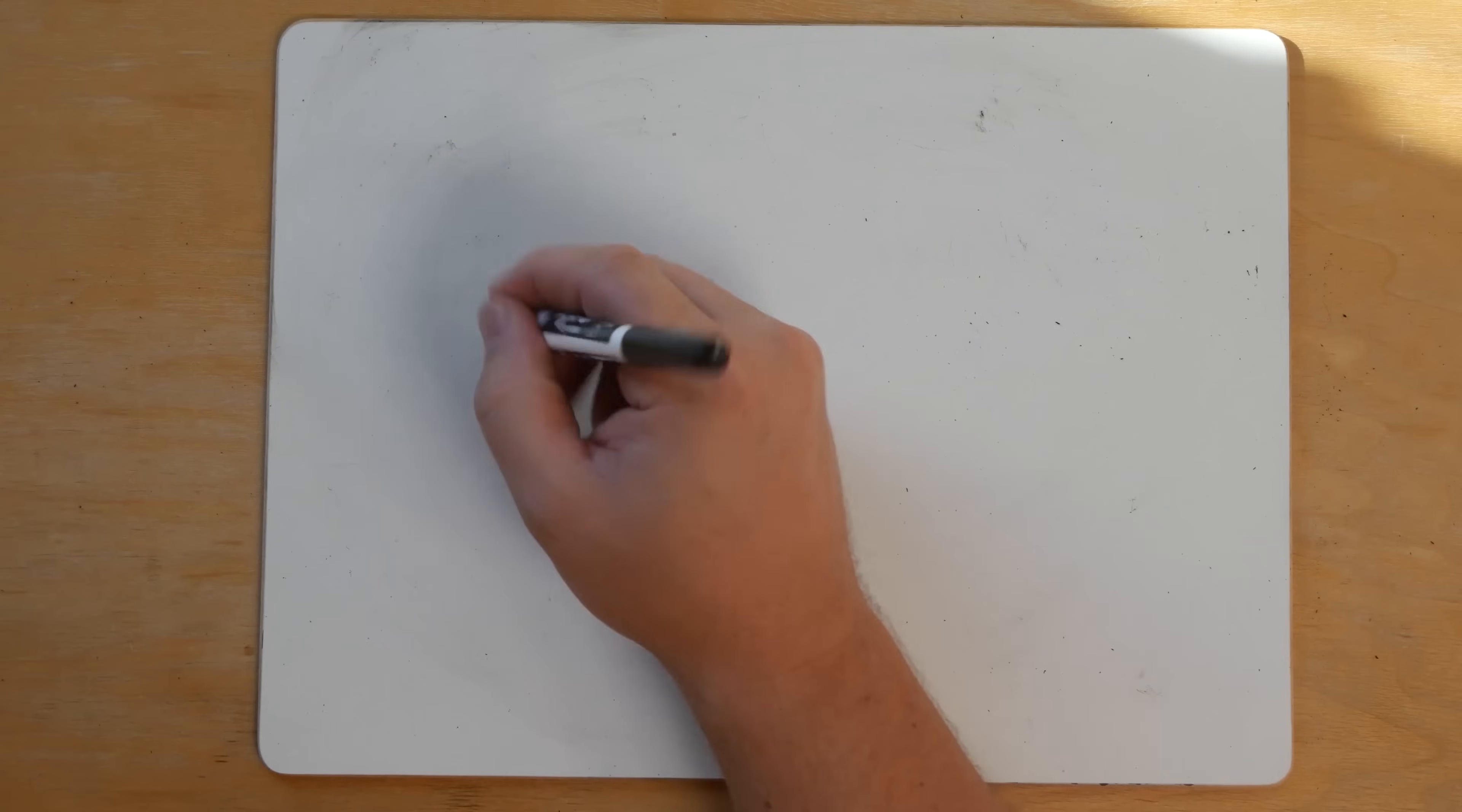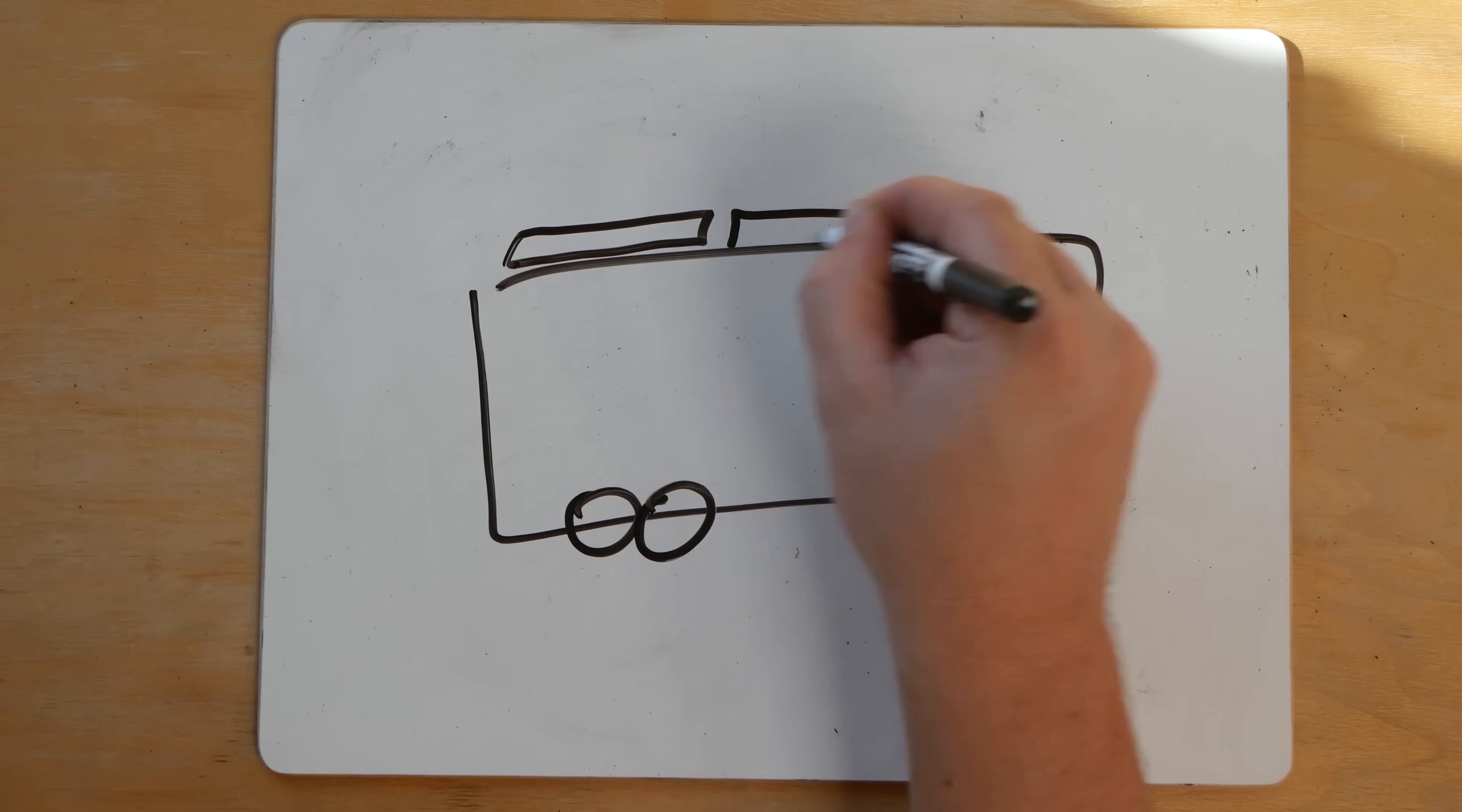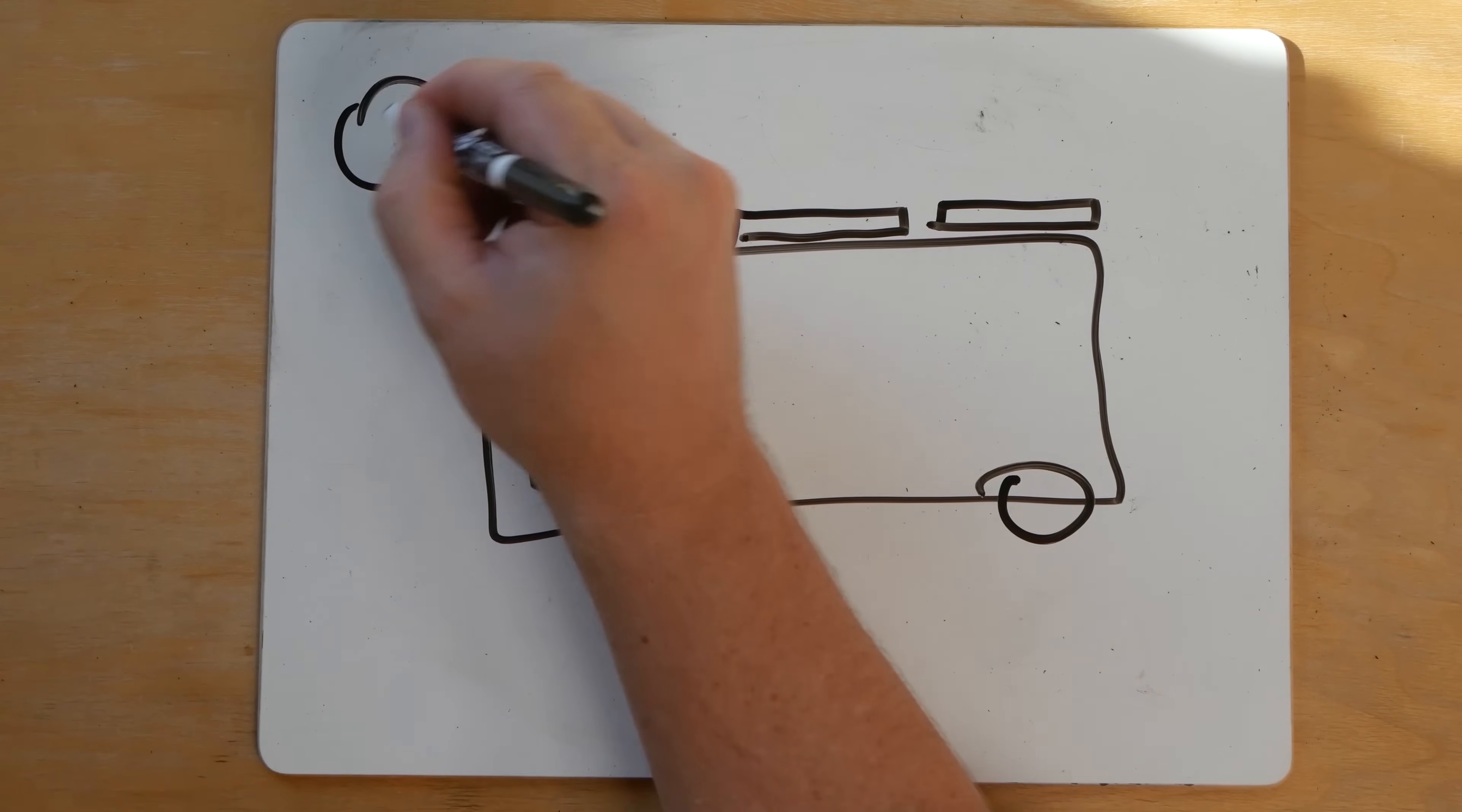So here's the 5th grade level. You have your RV. You've got your solar panels up here. And your RV has a battery. And we have the sun.